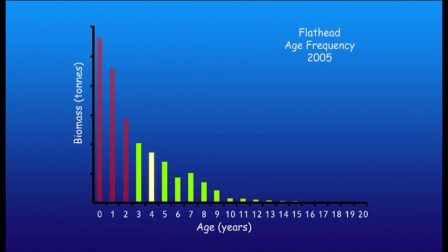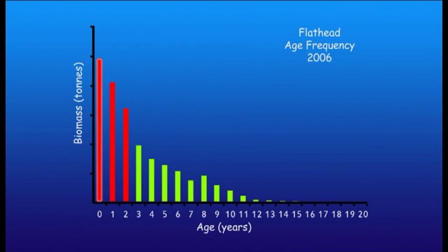We also know that tiger flathead mature at about 4 years old. Putting this together, we can see here in 2005 the proportion of the fish stock available for breeding — this is called the mature or spawning stock biomass. A good way to demonstrate the relationship between spawning stock biomass and recruits is to show age frequency graphs for a number of years. The number of fish spawned by the spawning stock biomass is estimated in the following year, 2006. The biomass of these very young fish are estimates because they are not caught by the fishermen — the model estimates their biomass based on the spawning stock biomass from the year before.